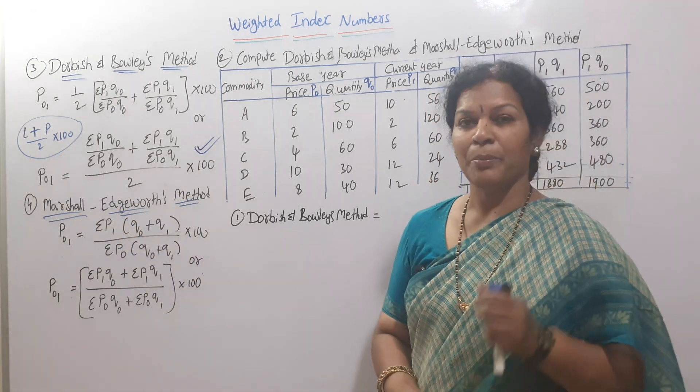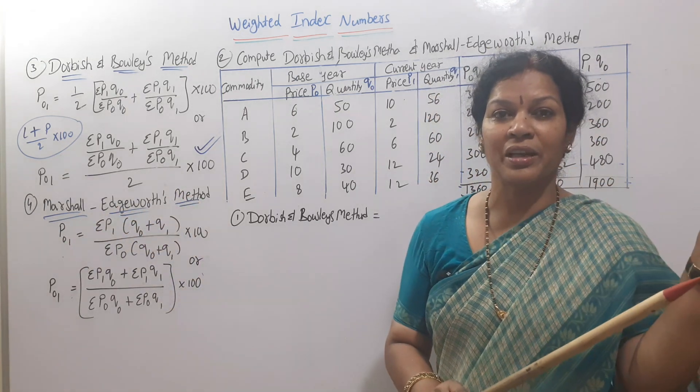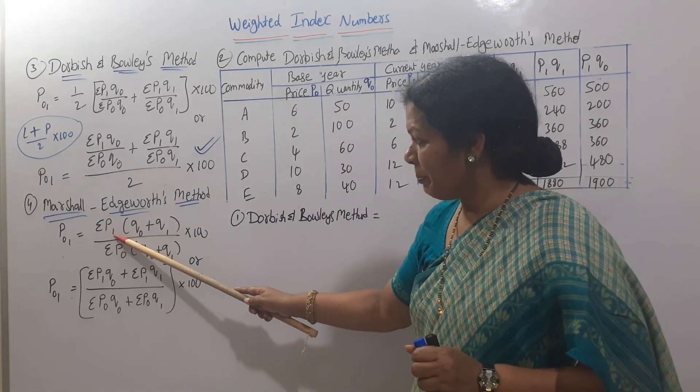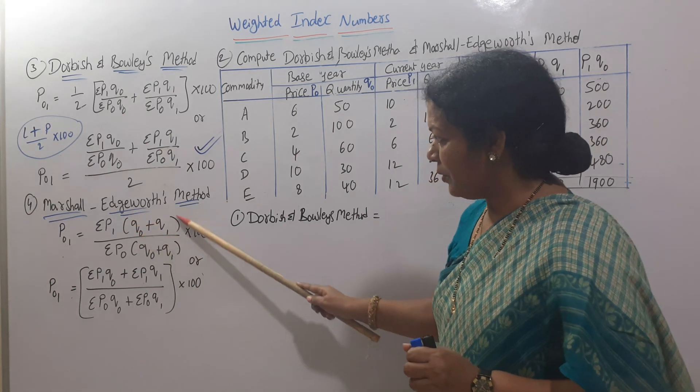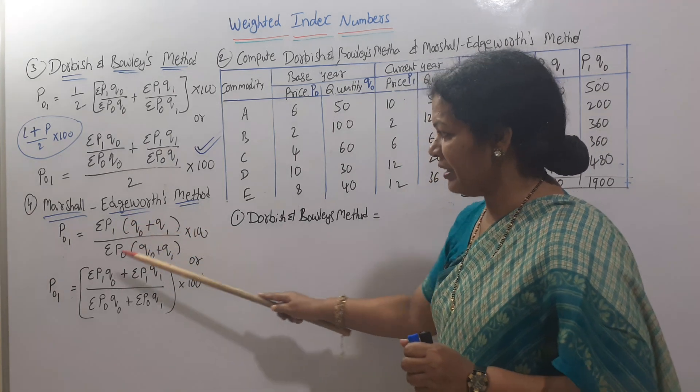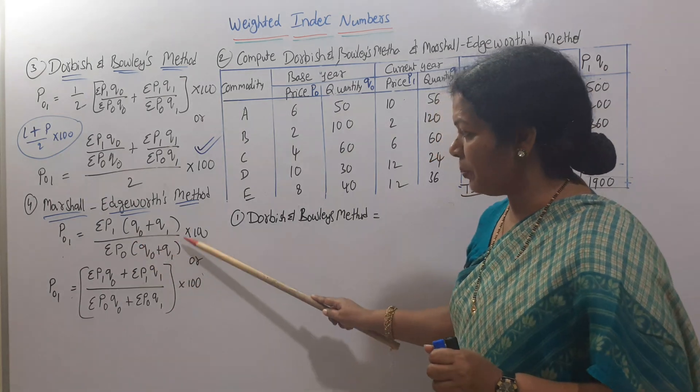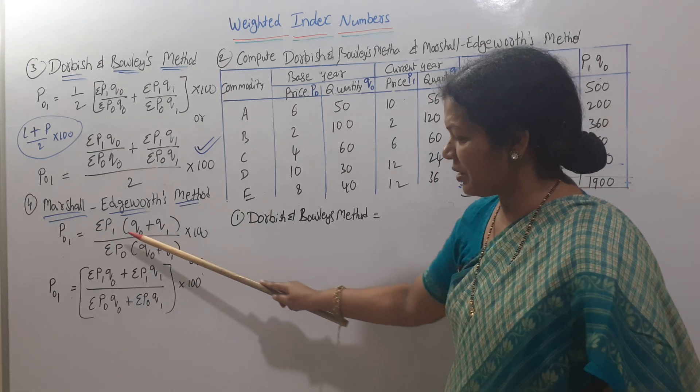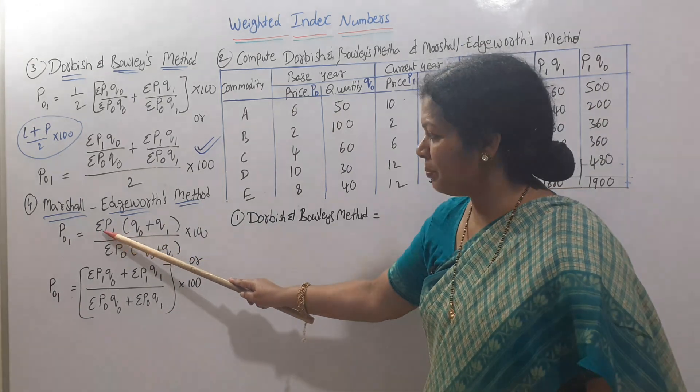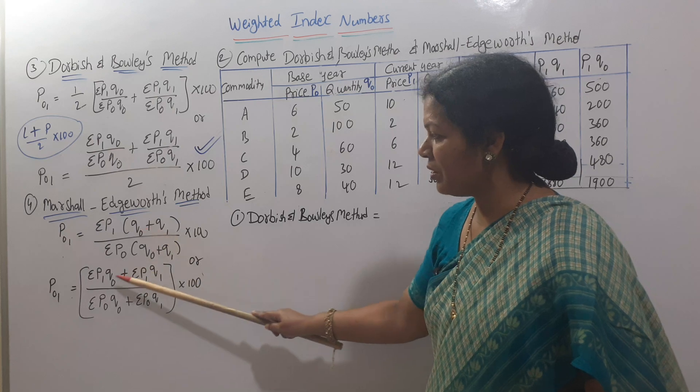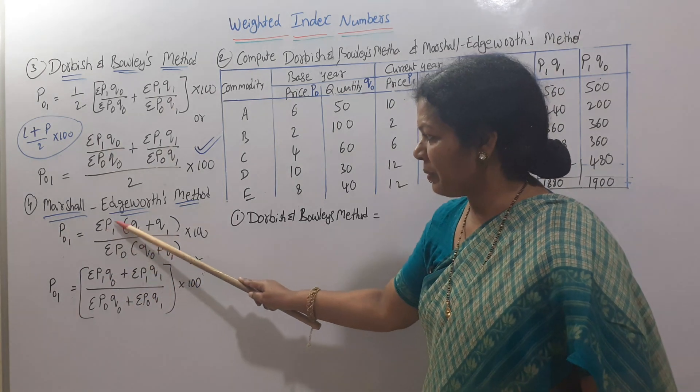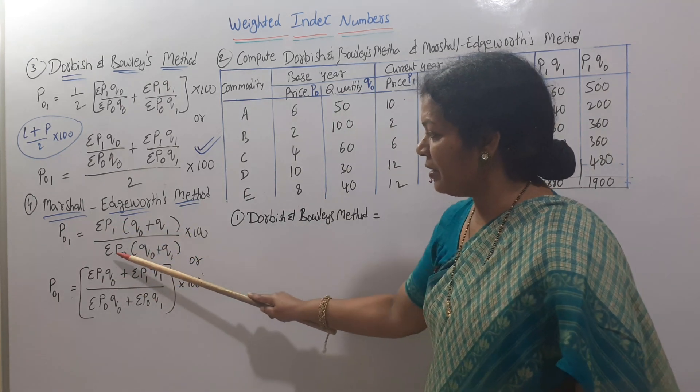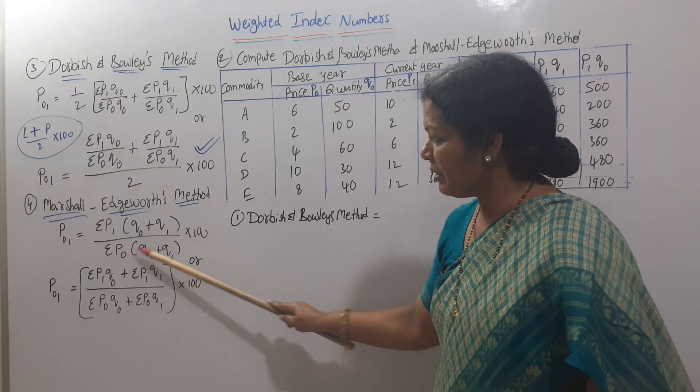Next, Marshall-Edgeworth method, also based on Laspeyres and Paasche. P01 equals Sigma P1(Q0 plus Q1) divided by Sigma P0(Q0 plus Q1) times 100. We can write this by multiplying: P1Q0 plus P1Q1 divided by P0Q0 plus P0Q1 times 100.